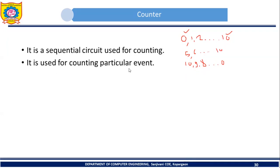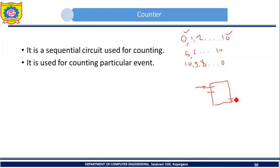A counter is used for counting a particular event. Consider one simple example. Assume that this is our class and it has one door here and one more door here. Students are entering the class through one particular door and leaving through the other. Suppose you want to keep track of how many students are entering and how many are leaving the class — here you can keep one counter.